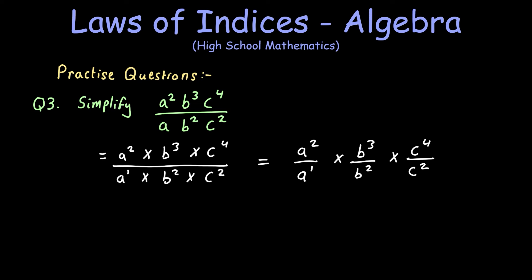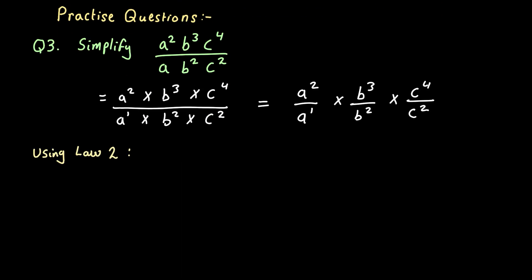So we've separated the bases a, b, and c. We've made them into their own fraction. And if we have a look back at our laws of indices, we see that we can use law two, where the powers are subtracted. So let's do that.